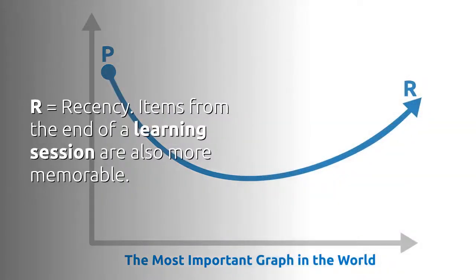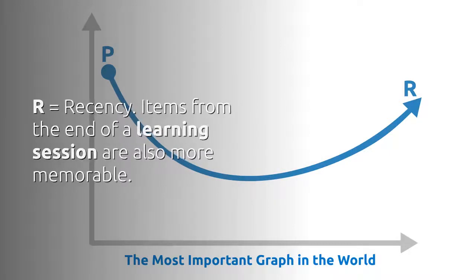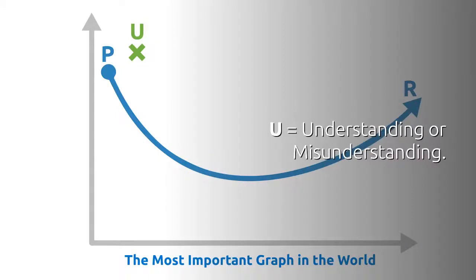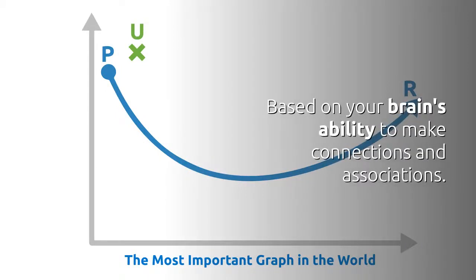R equals recency. Items from the end of a learning session are also more memorable. U equals understanding or misunderstanding, based on your brain's ability to make connections and associations.